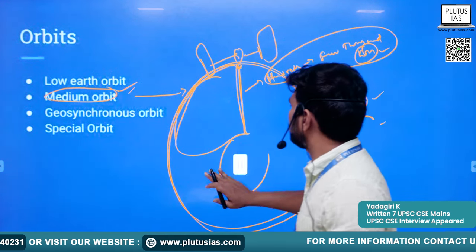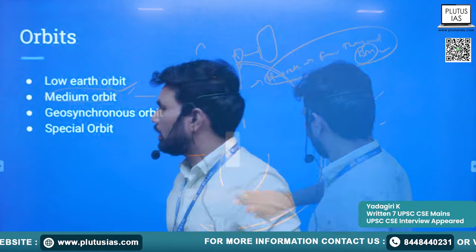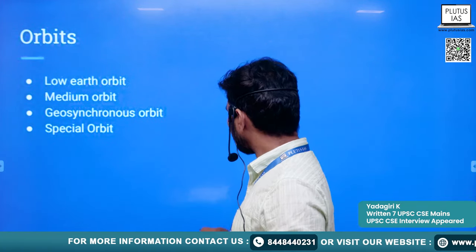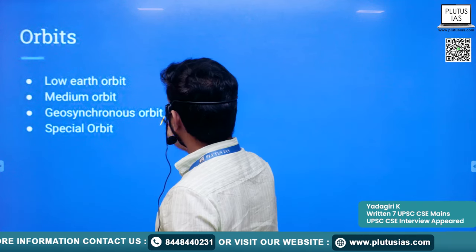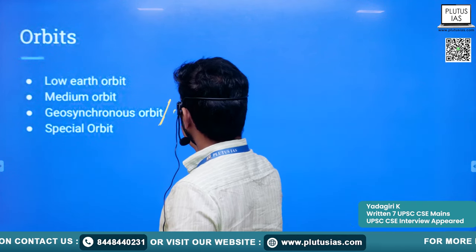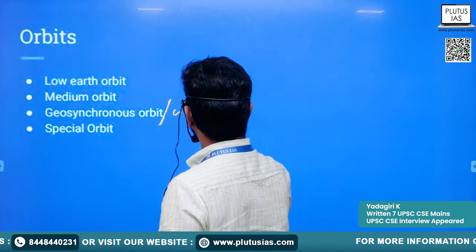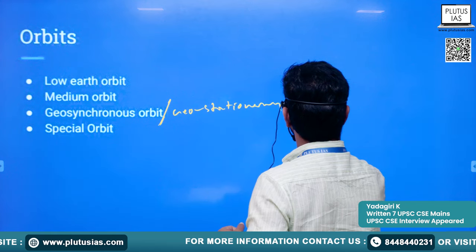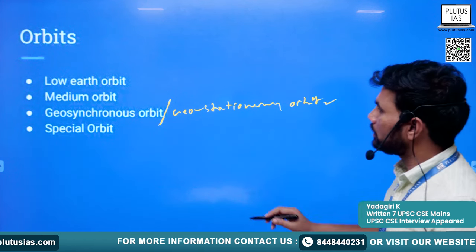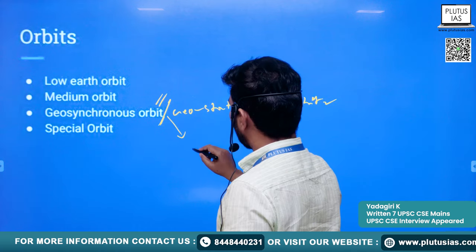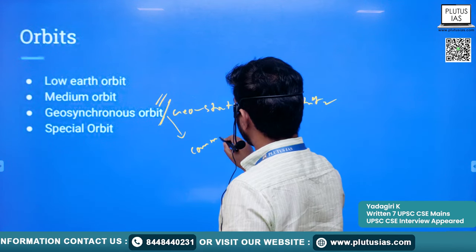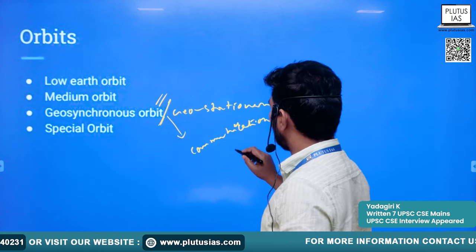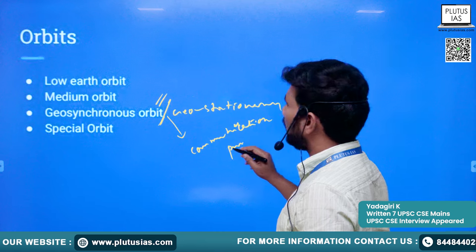The next orbit is the Geosynchronous Orbit. One type of geosynchronous orbit is the Geostationary Orbit. This is the most suitable orbit for communication purposes. We will also understand later in this lecture the types of satellites — each orbit is suitable for a particular type of satellite.